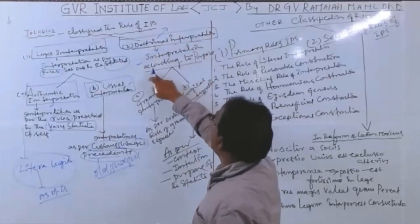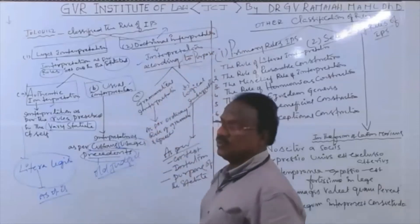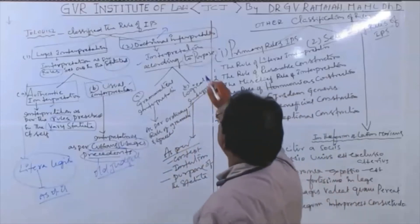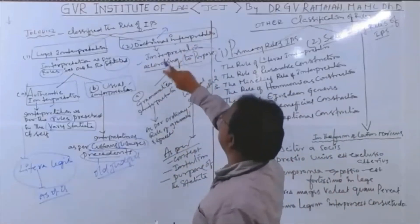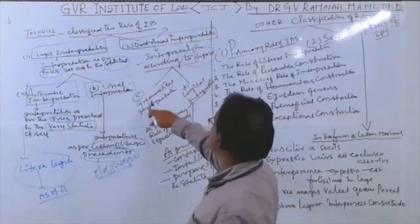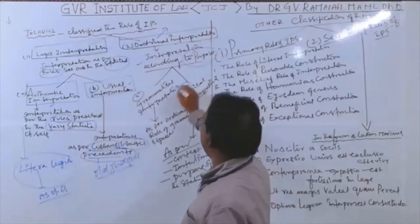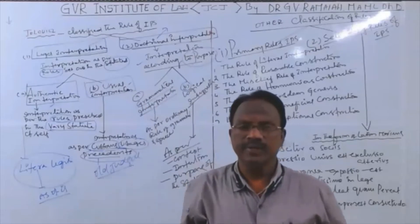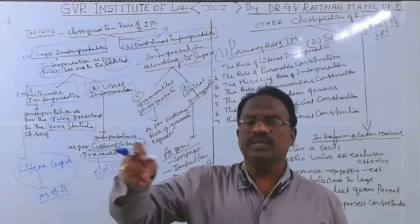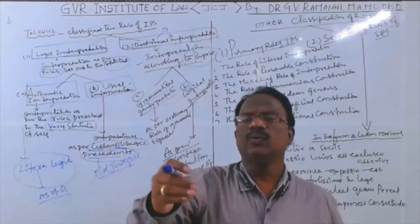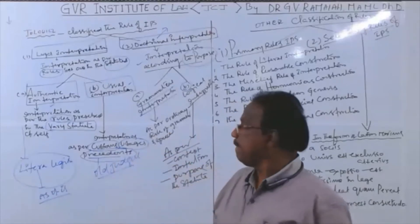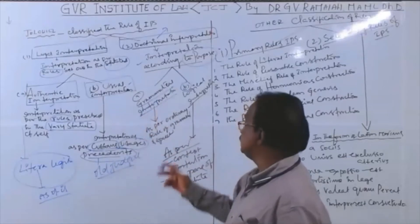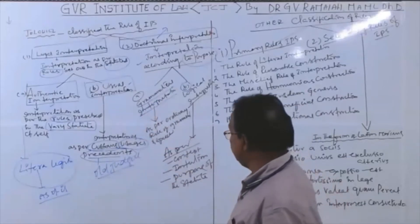Jolovics classifies doctrinal interpretation into two parts. The first is grammatical interpretation. Words in a language, with grammar, give their own expressions and meanings. Every word must be understood in its grammatical sense. As per the rules of ordinary grammar and speech — for example, Article 21 of the Indian Constitution states: 'No person shall be deprived of his life.'